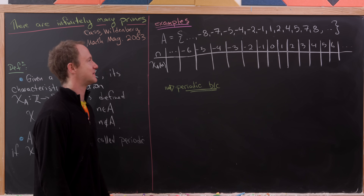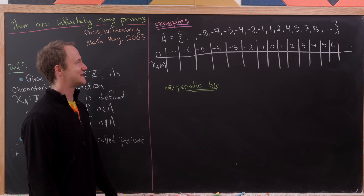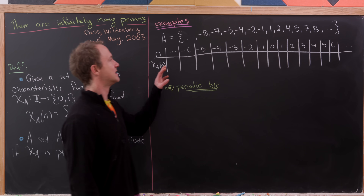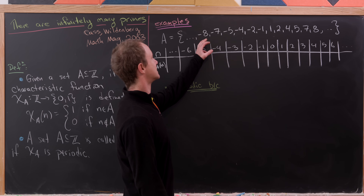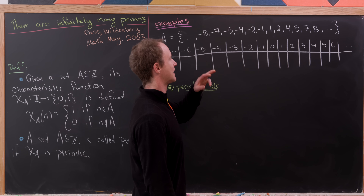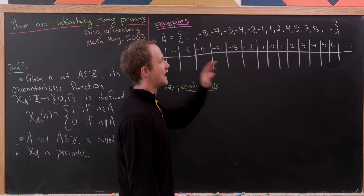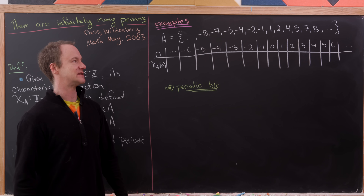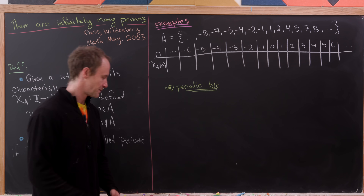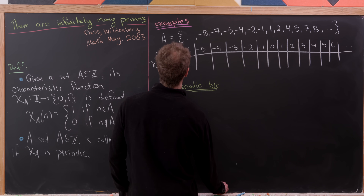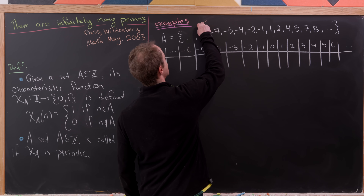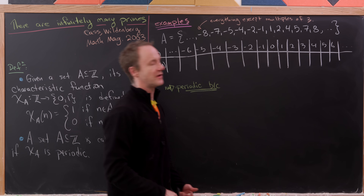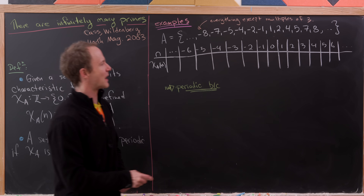Let's look at some examples. Let's say we've got this set A containing the numbers negative 8, negative 7, negative 5, negative 4, negative 2, negative 1, and then the positives of all those as well, and the pattern continues. We can quickly notice that this is everything except for multiples of 3.